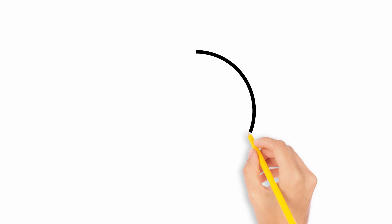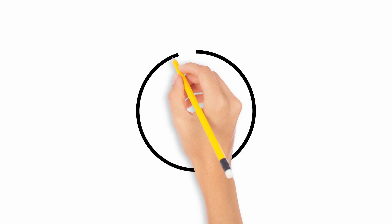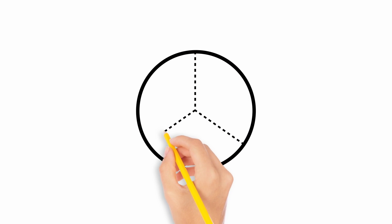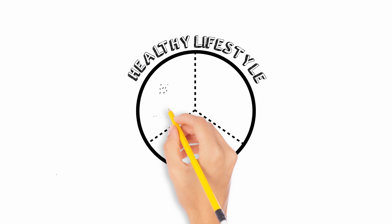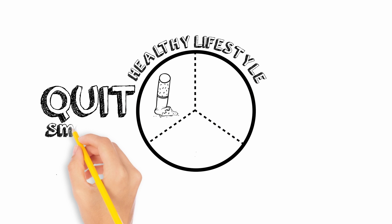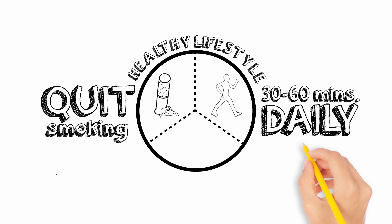If diagnosed with high blood pressure your doctor will have you focus on these three areas of lifestyle change in order to help lower your blood pressure to a healthier level. Quit smoking, exercise 30 to 60 minutes a day most days a week. Eat more fresh or frozen vegetables and fruit daily.